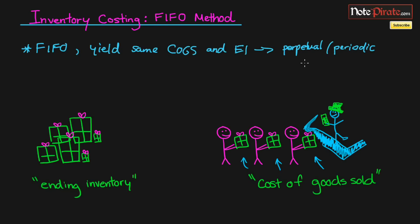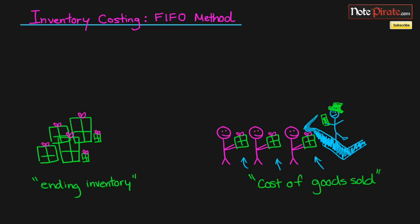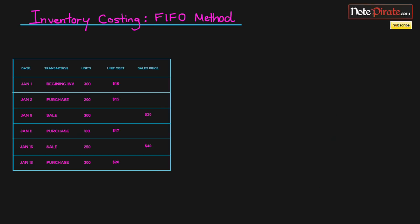The reason I bring that up is because other cost flow assumptions — like the average cost method, which we'll get into in the next tutorial — will actually produce different numbers depending on whether it's a perpetual or periodic system. So just note that down. We're going to be figuring out the cost of goods sold and ending inventory using this problem.